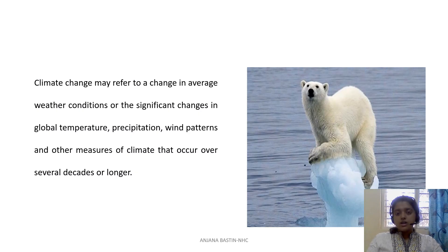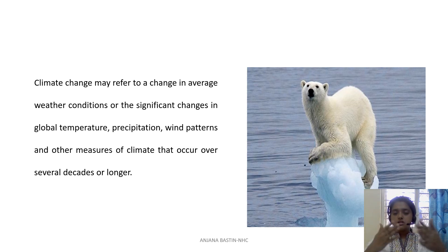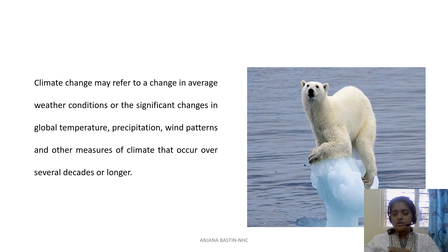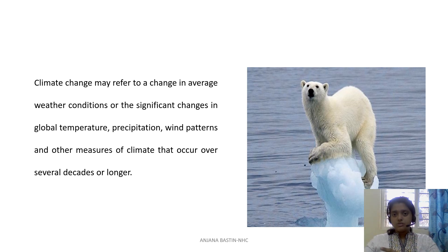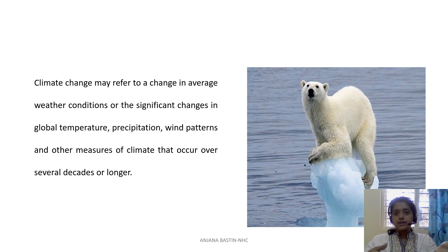Climate change: when there is a change in factors such as global temperature, precipitation, water level, etc., over a period of time — say 20 or 30 years, or maybe a shorter period — we call it climate change. So when there is a gradual increase in temperature because of these factors, we call it climate change. Climate change can be caused by man-made factors and also natural factors.